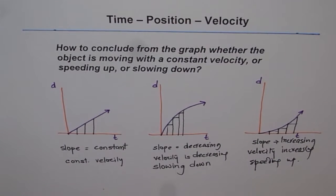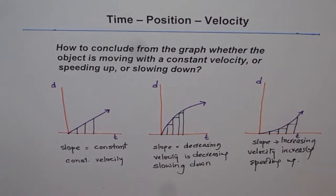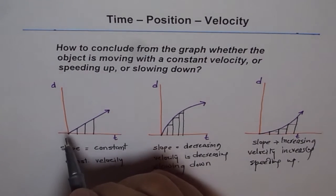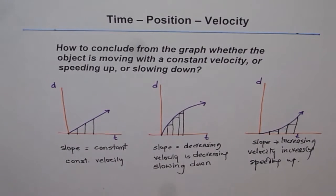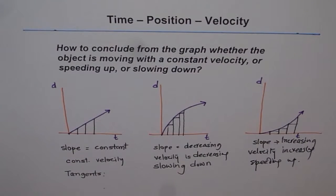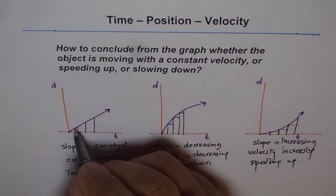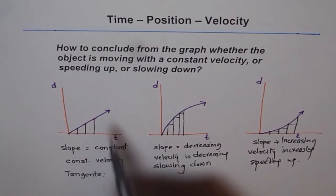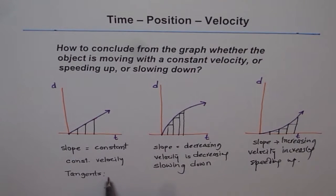So that is one way of analyzing the graph to figure out whether it is slowing down, speeding up, or moving at constant speed. The other way is to consider different points on the graph and draw tangents at each point. The tangent on the straight line is the same at every point, so the slope of the tangent is constant — meaning constant velocity. The slope of the tangent gives you the instantaneous velocity at that point.